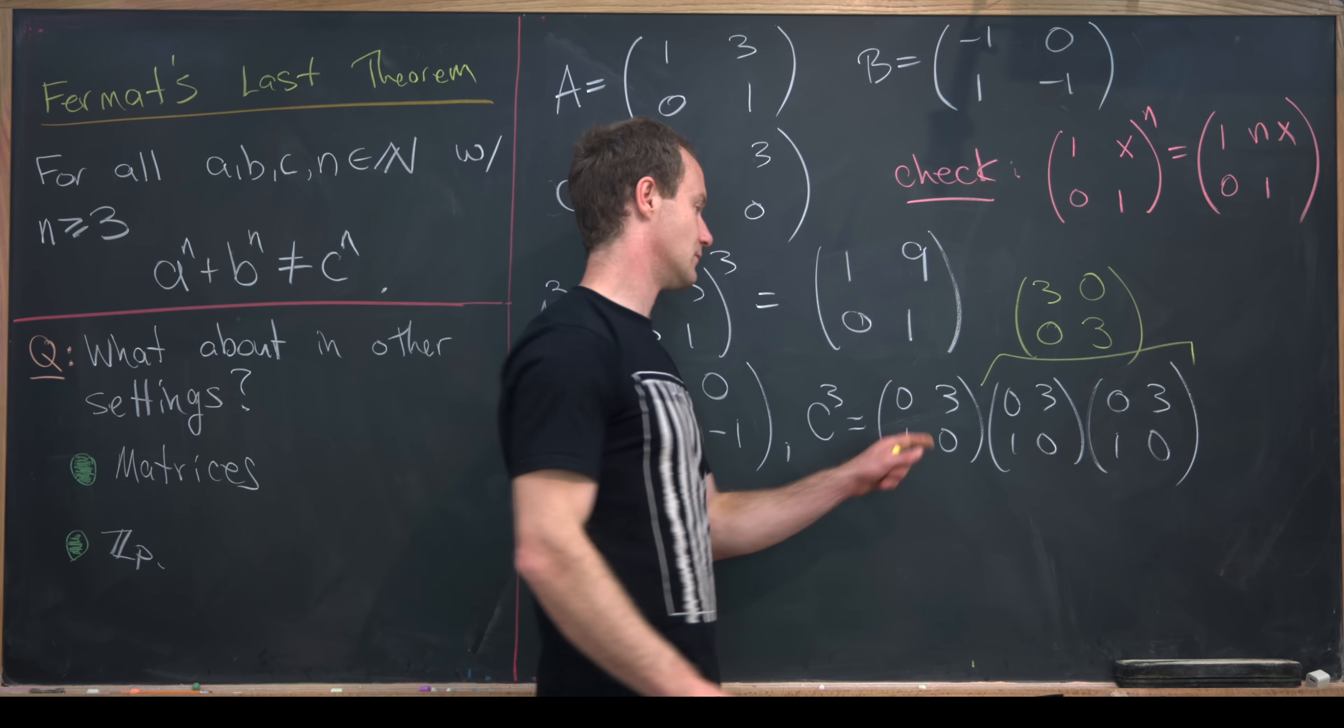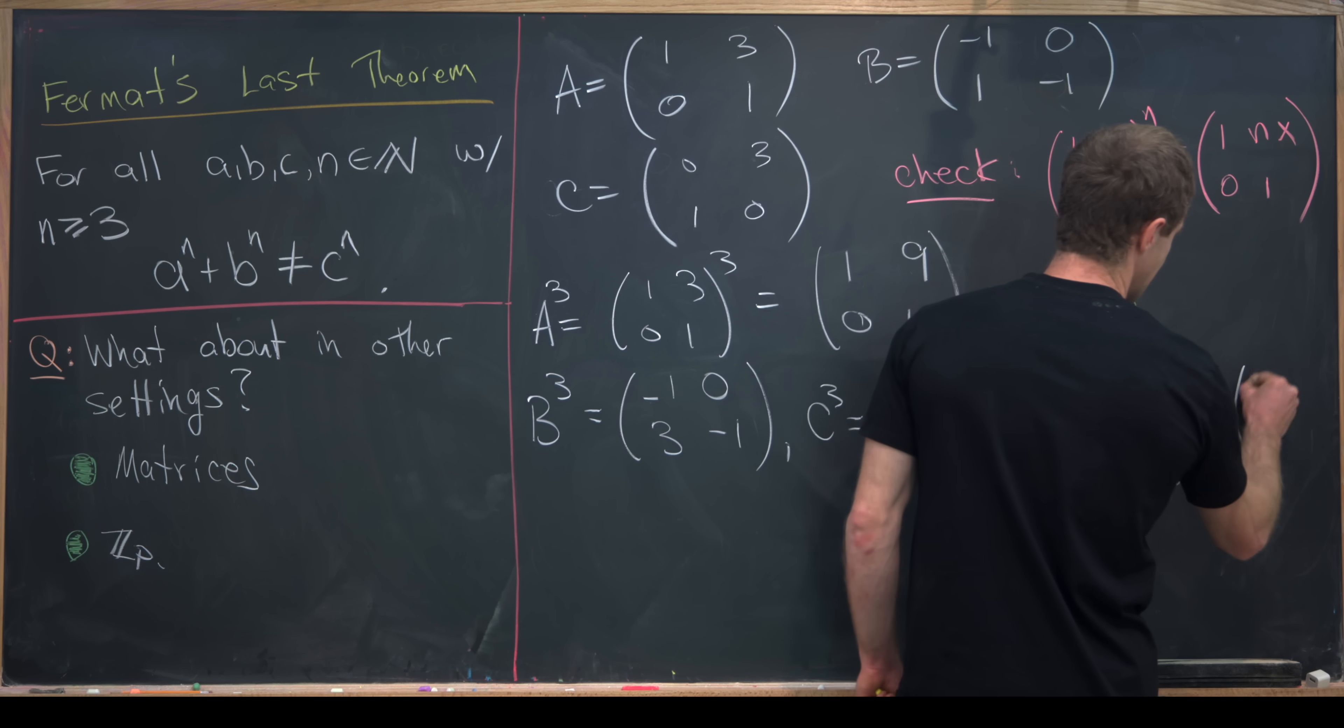So if we take that and multiply it into what we already have, we get 0, 9, 3, 0.